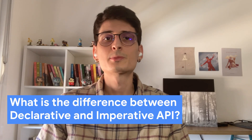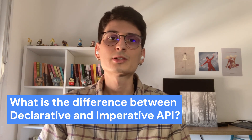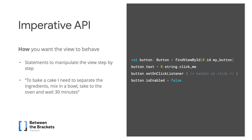What's the difference between declarative and imperative API? The imperative API is the one we use while programming with the Android View System. Think of an Android button in XML. To manipulate it, we have several functions to be called with its reference: SetTags, isEnabled, SelectionListener, etc. We are basically using statements to change its state.